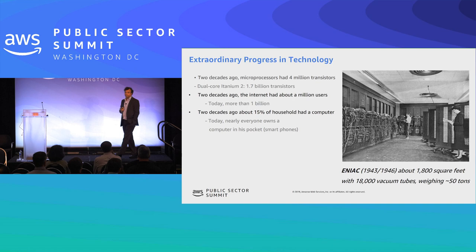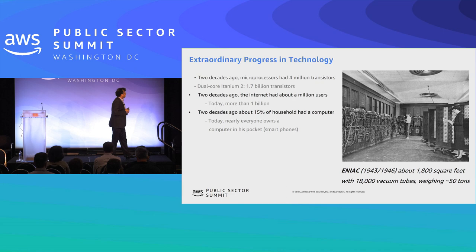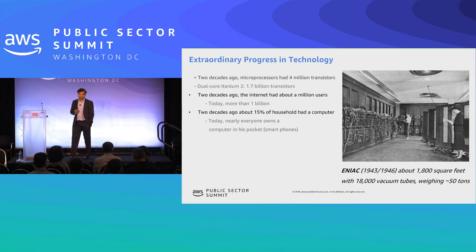20 years ago, a microprocessor had 4 million transistors. Today, any given CPU has roughly about 1.7 billion transistors. The human brain has roughly about 50 billion neurons. 20 years ago, the internet had about a million users. Today, we have more than a billion users. 20 years ago, 15% of households had computers. Today, we all have computers in our pockets.